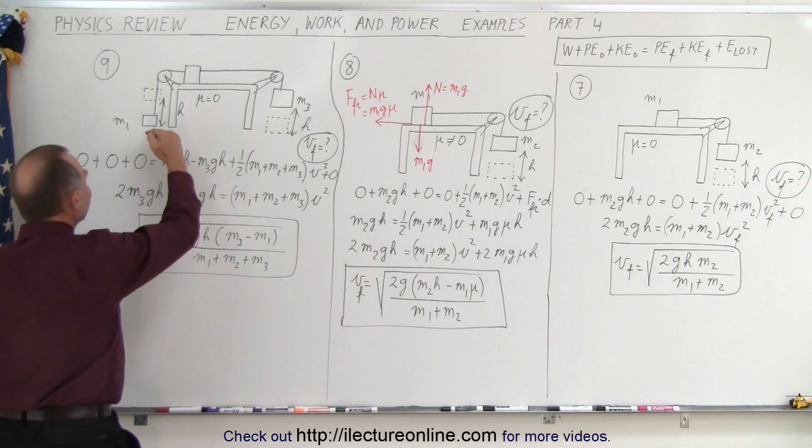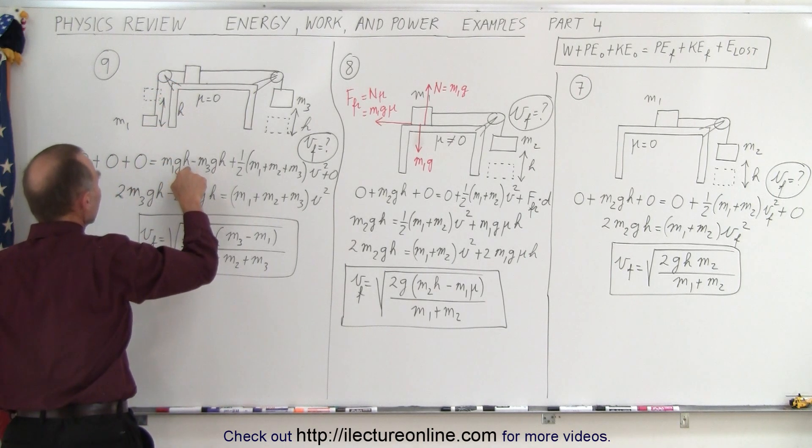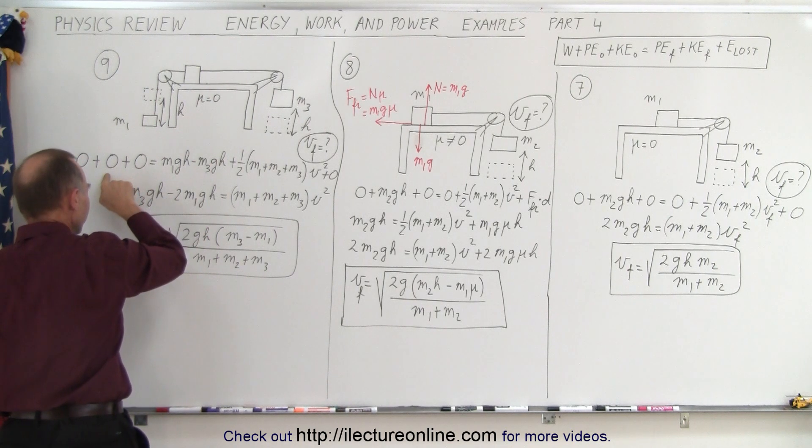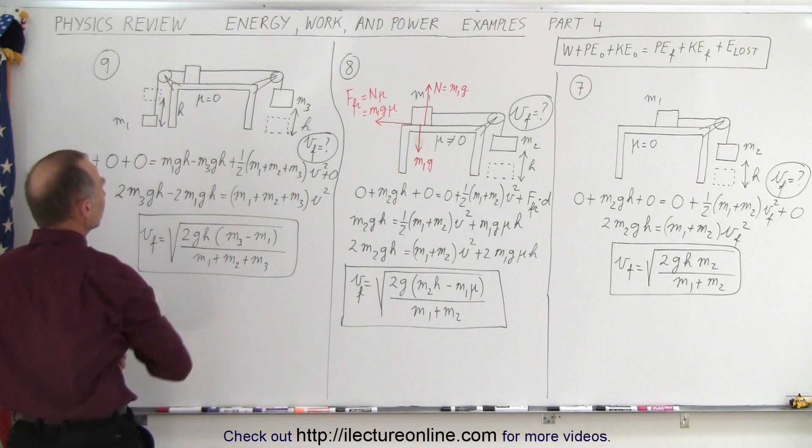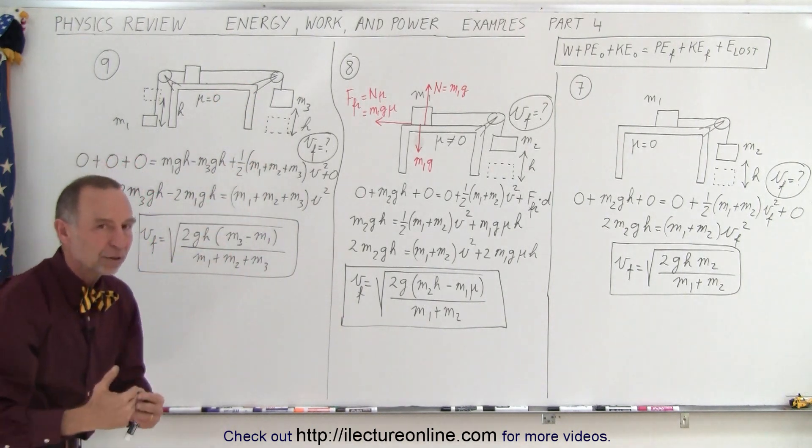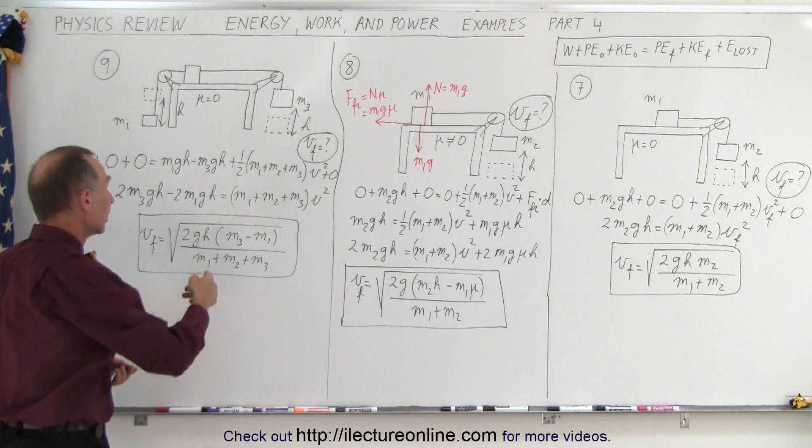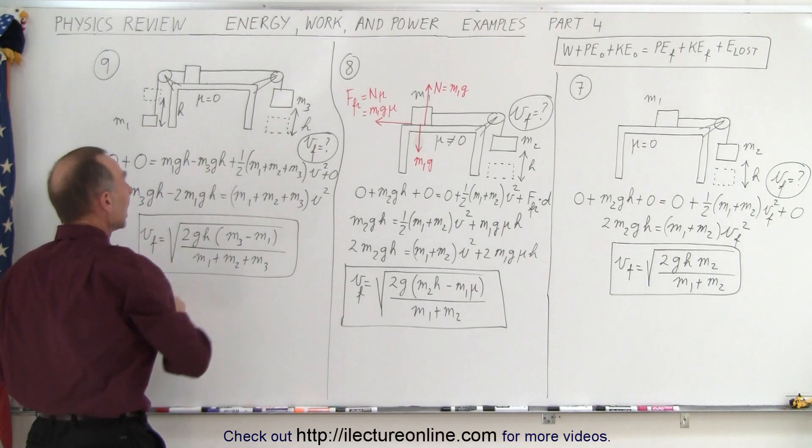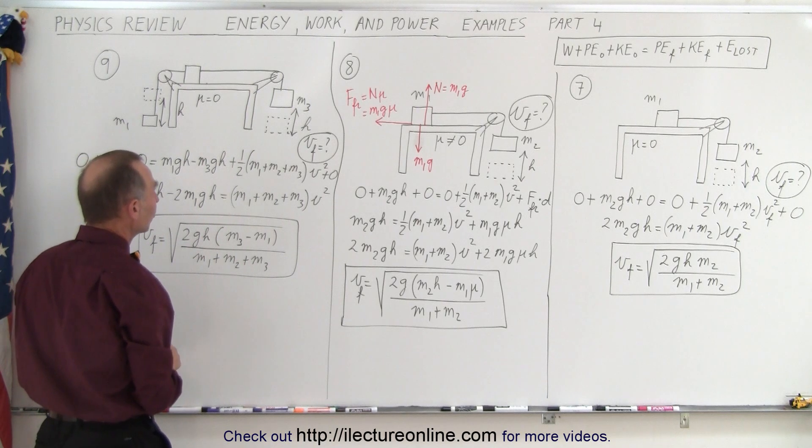Well notice that m1 has gained height—how much? h. So the potential energy afterwards relative to the initial potential energy is m1gh. m3 has dropped so it has lost potential energy—how much? By the amount minus m3gh. It's dropped mgh and so we have to subtract that.